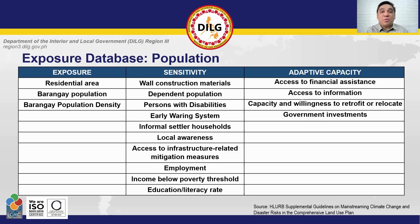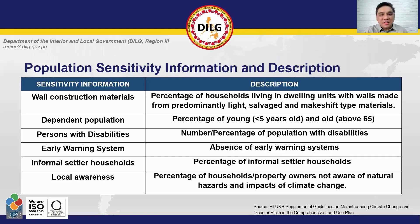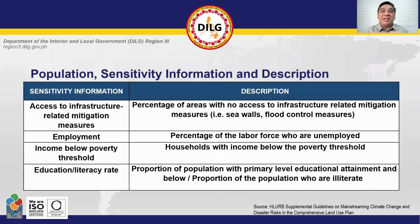For population sensitivity, it is recommended to determine the wall construction materials, dependent population, persons with disabilities, early warning system, informal settler households, local awareness, access to infrastructure-related mitigation measures, employment, income below poverty threshold, education, and literacy rate. The best source for this is the CBMS because these are the information included in the household interview, and you can also use the household maps to only include those that are exposed to a particular hazard.